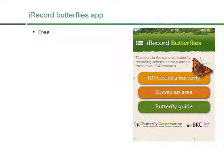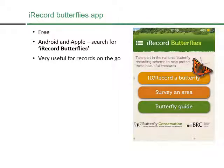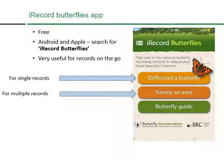The iRecord Butterflies app is completely free to download. You can use it on Apple or Android devices, on a phone or a tablet. To find it, search in your app store for 'iRecord Butterflies'. It's extremely useful for records on the go because it can find you using GPS, or you can submit records when you get home. You can submit single records, multiple species records, and there's also a free ID guide with all UK butterfly species, including many photos, maps, and flight times.